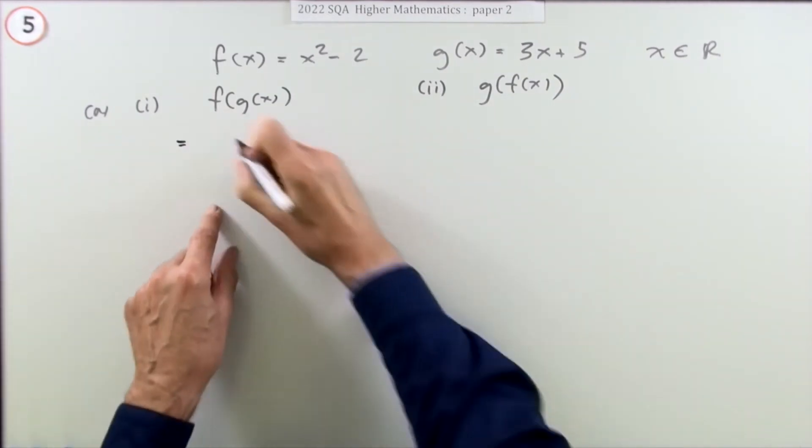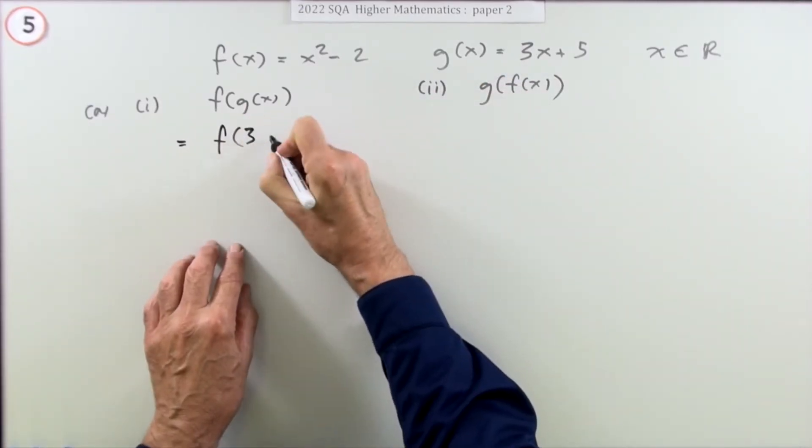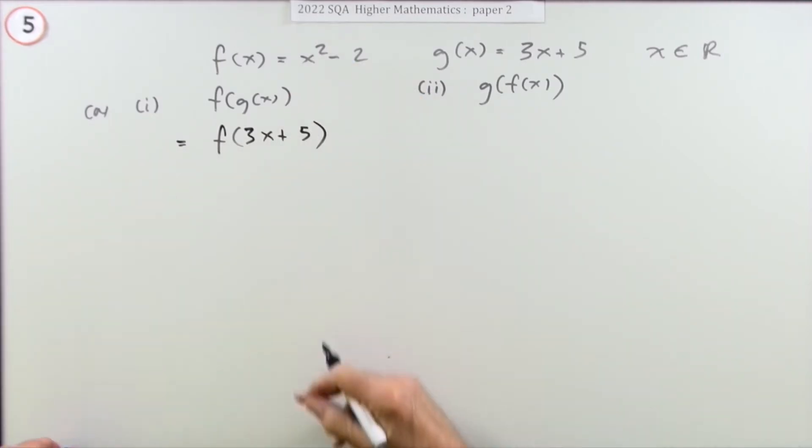Start off with what g(x) says. g(x) is 3x plus 5. Just replace it, and that gets you the first mark.